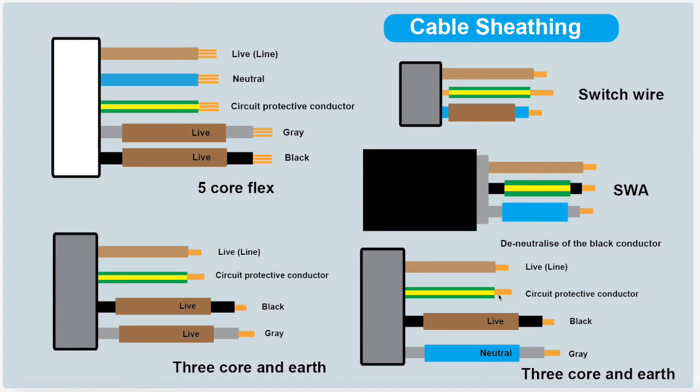As in your SWA which is often just a three core cable. You have your brown, your black and your grey. And in this example, the brown is always live. You would use the black as the CPC and sleeve that in green and yellow sleeving. And the grey would be the neutral and you would sleeve that in blue.